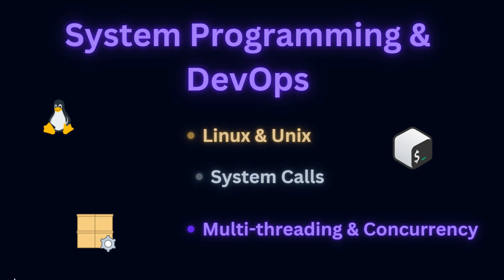Use GitHub Actions to automate testing and deployment. A good project at this stage is setting up a CI/CD pipeline that automatically deploys your project to AWS or a virtual machine when you push code to GitHub.